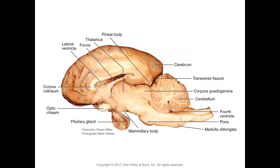In the mid-sagittal sheep brain section: the cerebral cortex, pineal body of the epithalamus, thalamus, hypothalamus, mammary body, optic chiasm, and a large pituitary gland are visible. The corpus callosum — the fibers connecting the left and right hemispheres — arcs prominently. The lateral ventricle is also visible, as well as the fornix, which are association fibers (not to be confused with the falx cerebri).